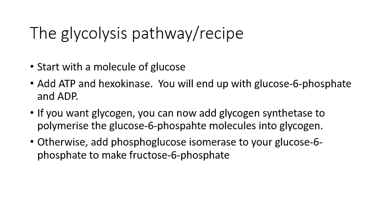To continue the glycolytic pathway we add another enzyme, phosphoglucose isomerase. Isomerase means we convert glucose into one of its isomers. Both glucose and fructose are six-carbon structures. We take glucose-6-phosphate and modify the glucose part to make it into fructose-6-phosphate.